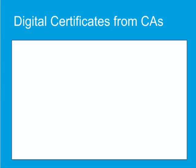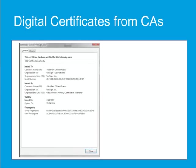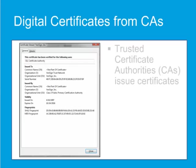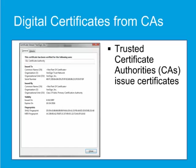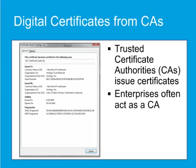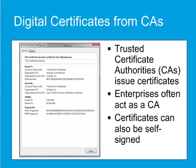A digital certificate certifies the ownership of a public key by the named subject of the certificate. Commercial certificate authorities, or CAs, charge to issue certificates, and customers expect certificates from the major CAs to be pre-installed in their browsers. Large enterprises often act as their own CAs and provide certificates. Sites can provide their own self-signed certificates as well, acting as their own CA, but this is inherently less secure.